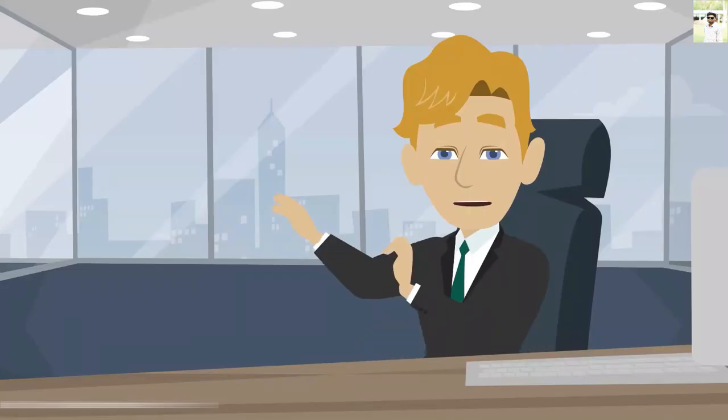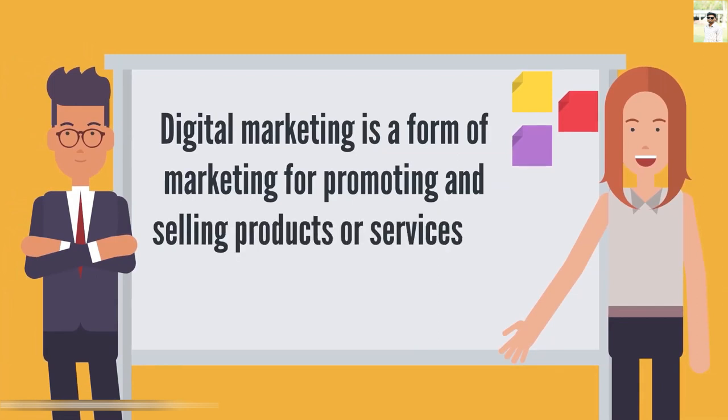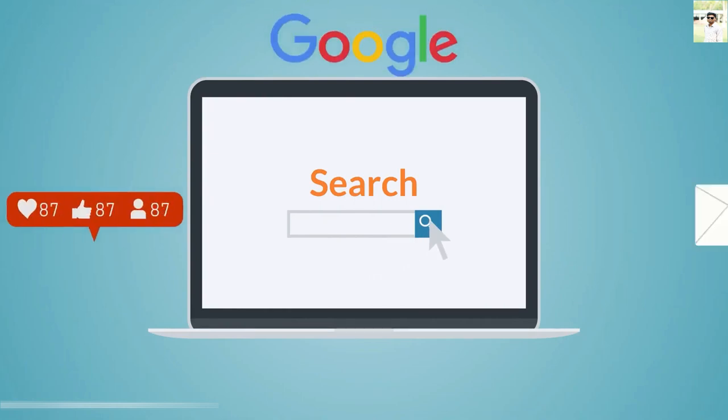Let's get started with a simple definition of digital marketing. Digital marketing is a form of marketing for promoting and selling products or services on the internet. It's the process of leveraging different online marketing channels, like search engines, social media networks, and email to reach your target audience.